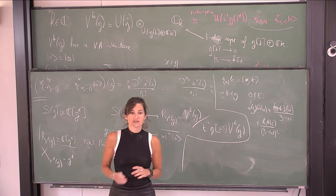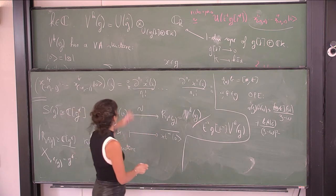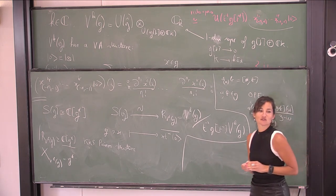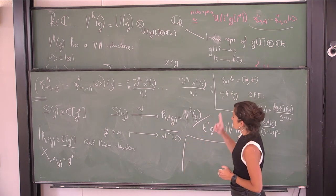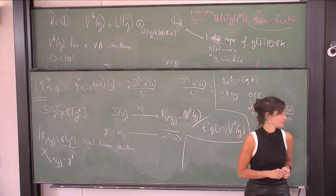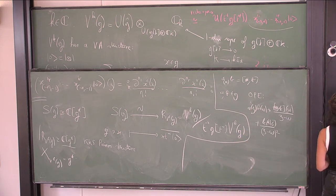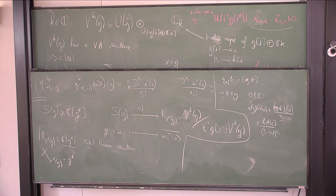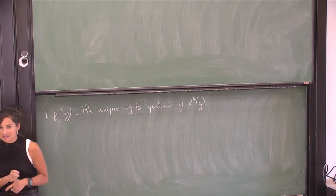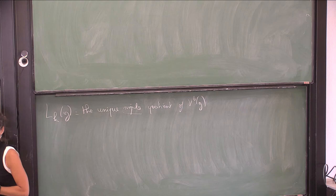Now I am taking a simple quotient, because this vertex algebra is very important for representation theory of Kac-Moody algebras. In representation theory, what you want is to understand simple modules. So I am now taking a simple quotient, and in this setting it will strongly depend on K — and it will be the same in W-algebras. The unique simple quotient is also simple as a g-hat module, in fact.